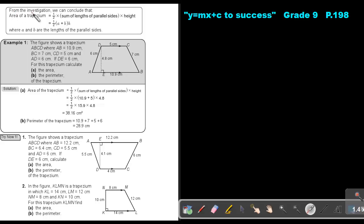Now, from the investigation, we can conclude that the area of a trapezium will be a half multiply the sum of the lengths of the parallel sides, multiply the height, the perpendicular height. So it's actually a half, that is the parallel sides, and that is your perpendicular height, where a and b are the lengths of the parallel sides. But let's look at an example.